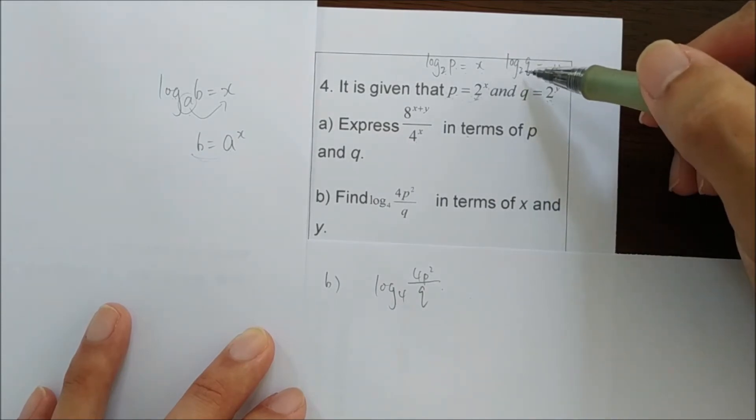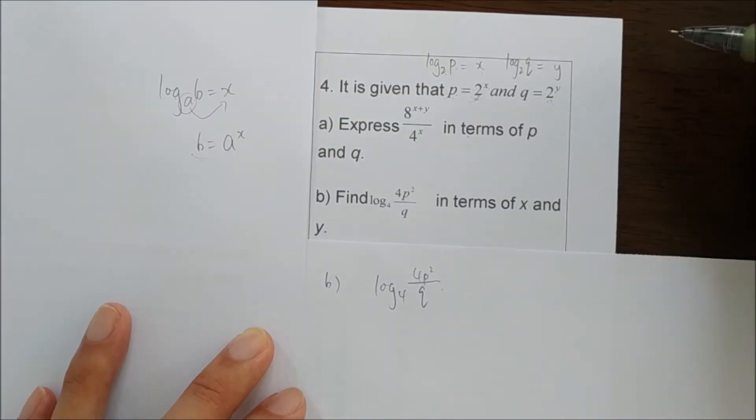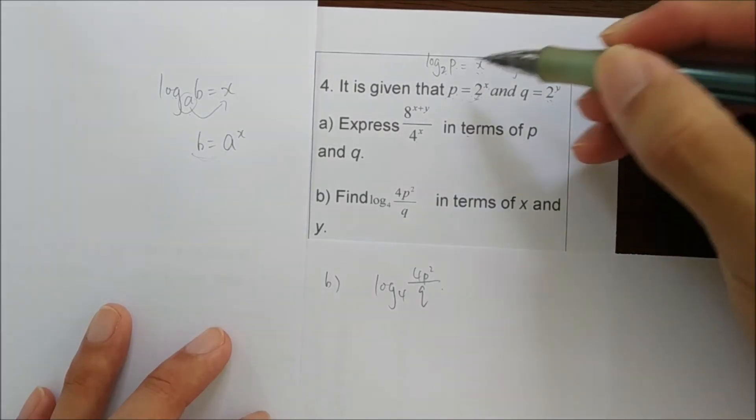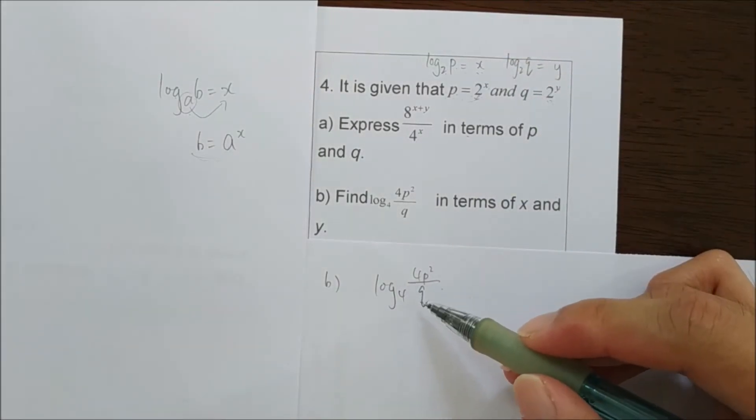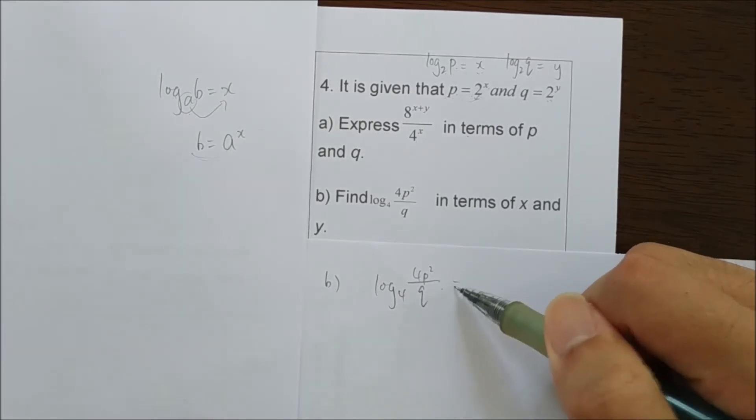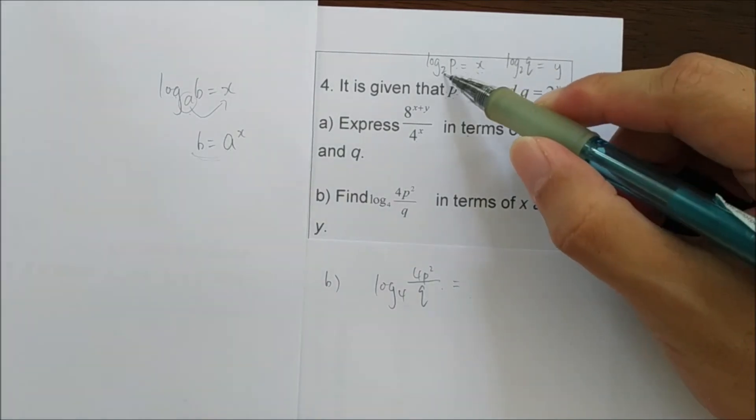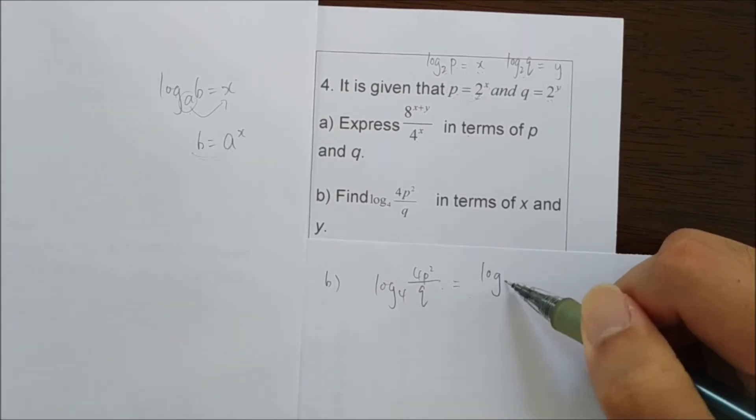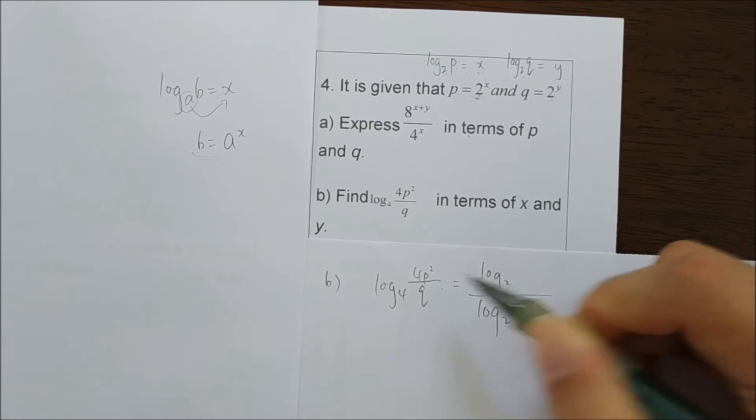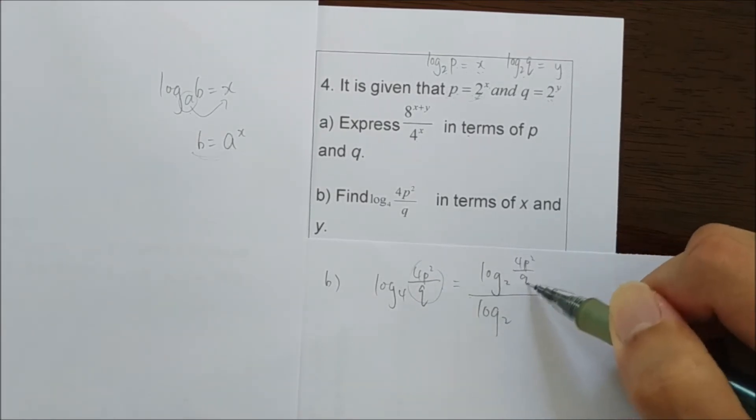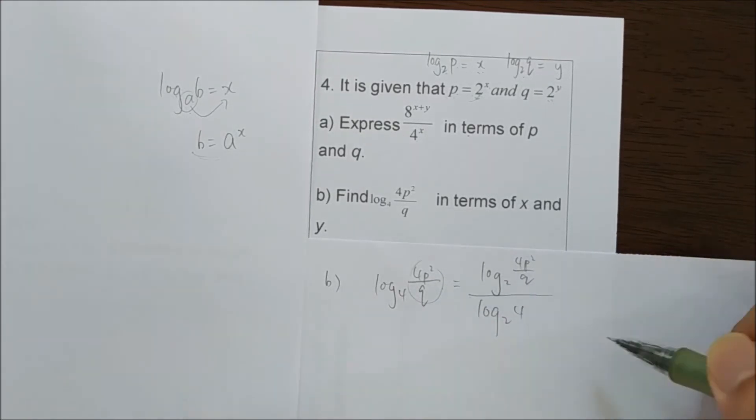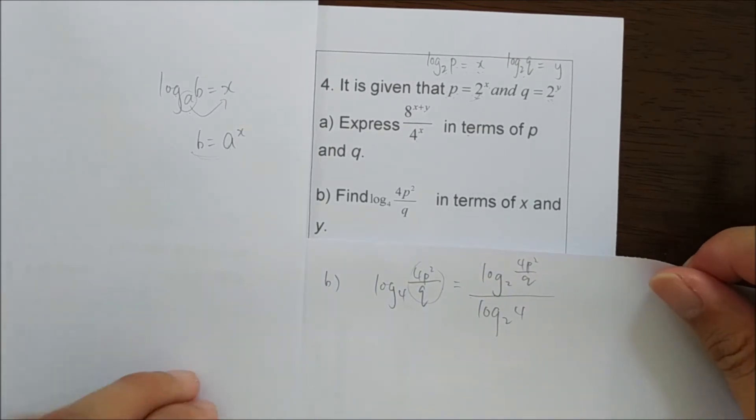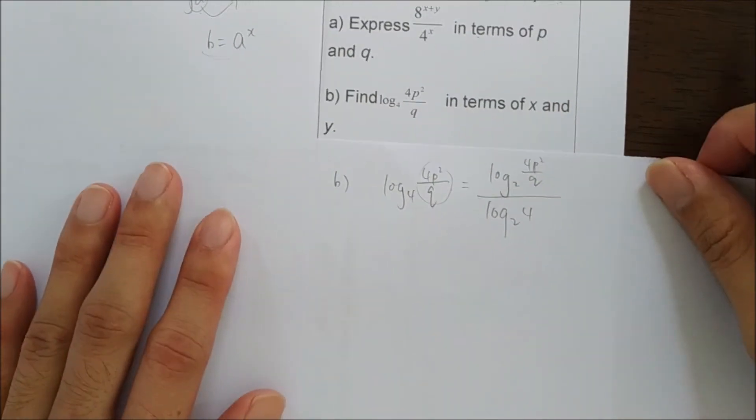Now I have x and y in terms of log. Then I can try to find the simplified log of this with base 2. So since both of these are in base 2, and I have here base 4 log, I need to first change the base. So I use the formula to change the base. I get this. Everything here is here, and everything here is here. Then I just simplify it.